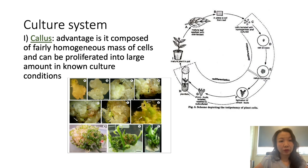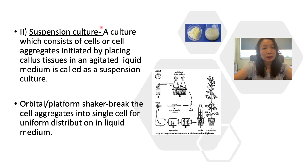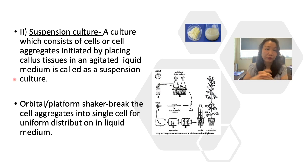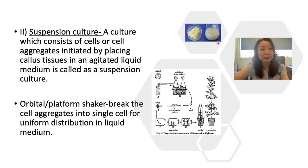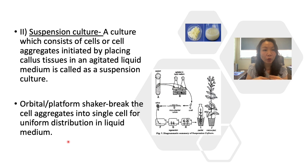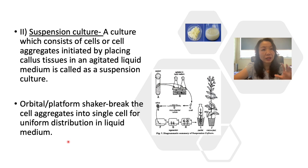We also have suspension culture, which is a culture consisting of cells or cell aggregates initiated by placing the callus into a liquid medium with agitation. It is called suspension culture because the callus cells are suspended in the nutrient medium. The orbital platform or shaker functions to break the cell aggregates into single cells for uniform distribution in liquid medium so that each cell can absorb nutrients equally. There are many different types of suspension culture based on bioreactor design.